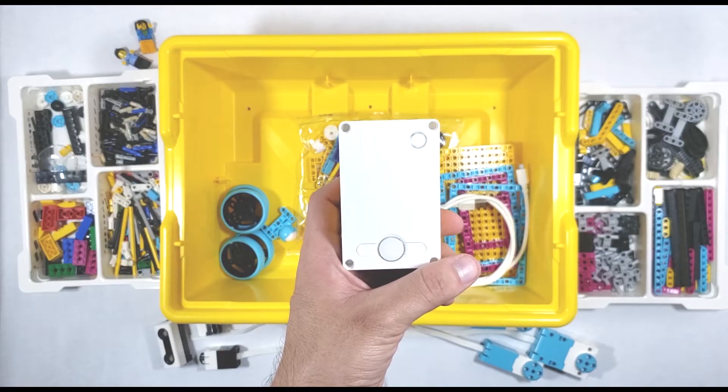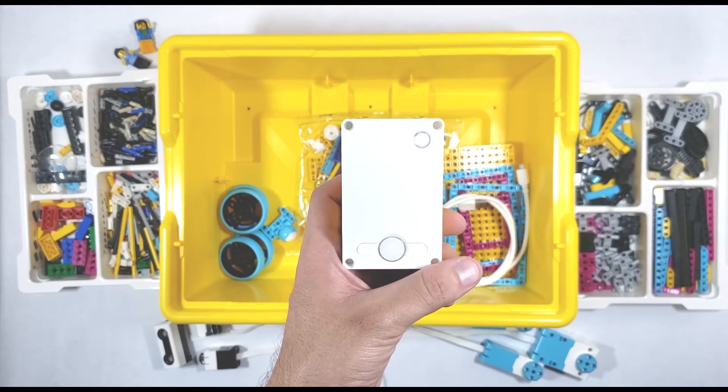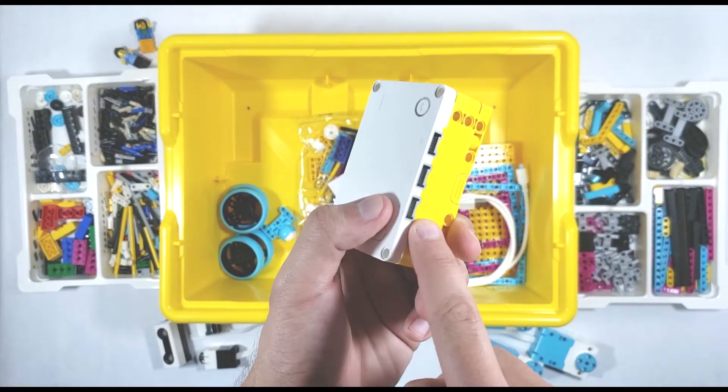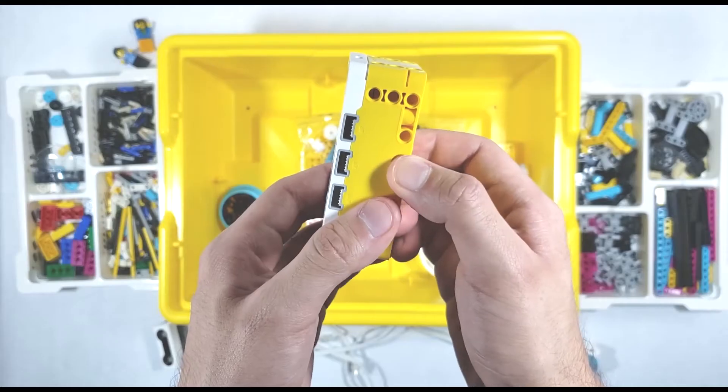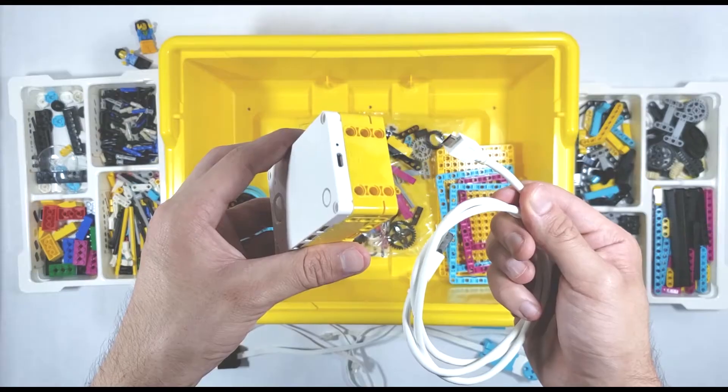The brains that control everything is this large programmable brick called the hub, which has six input-output ports, three on each side, and a five by five light matrix display, along with a rechargeable battery via micro USB cable.